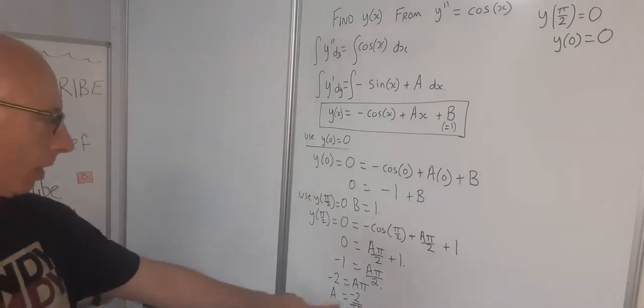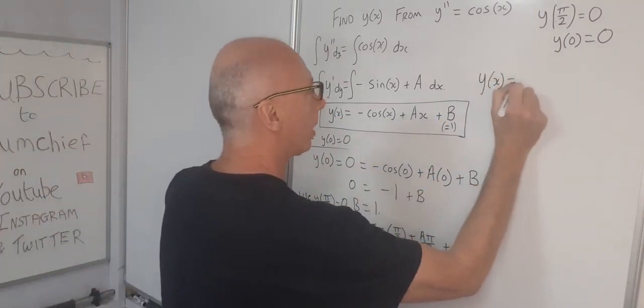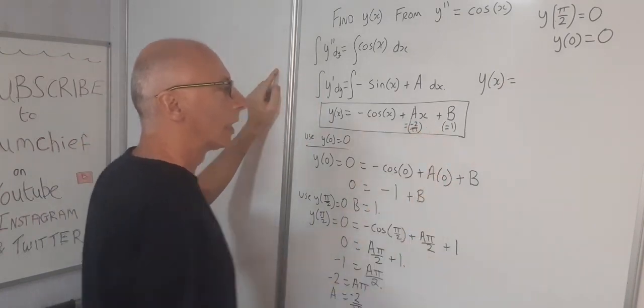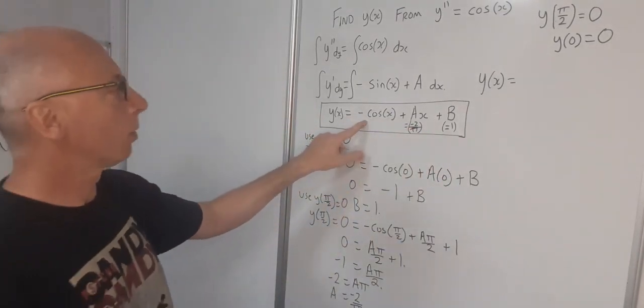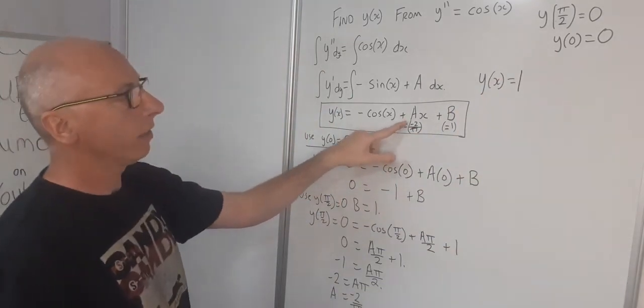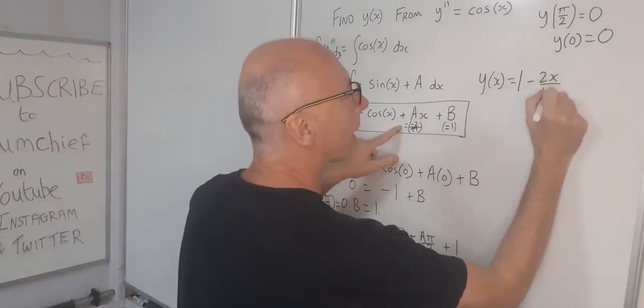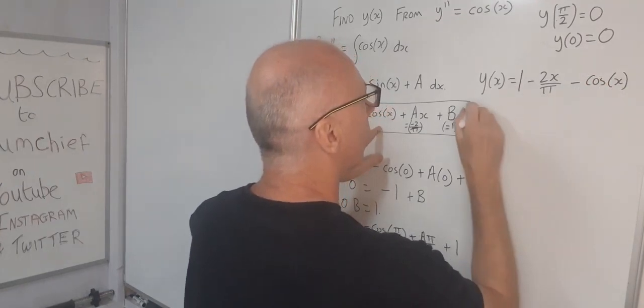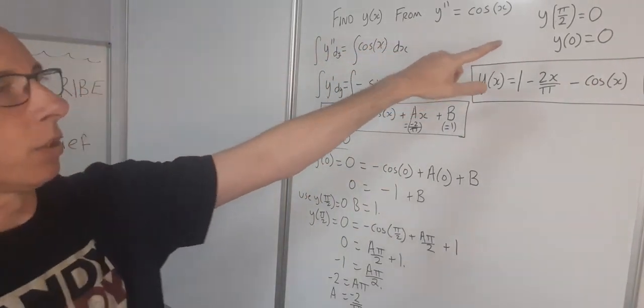Let's see what we've got here now. So we can plug in this formula here now with the conditions. So that gives us y of x equals, so a is minus 2 over pi. So y of x equals, b is 1, so I'm going to write that here, that's first, that's positive. a is negative, so I'm going to write that as minus 2x over pi. And then minus cosine of x. And that is the solution to our question using these boundary conditions.